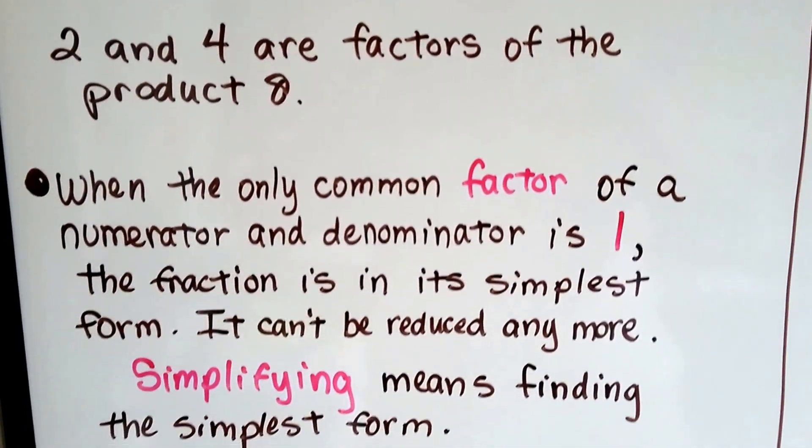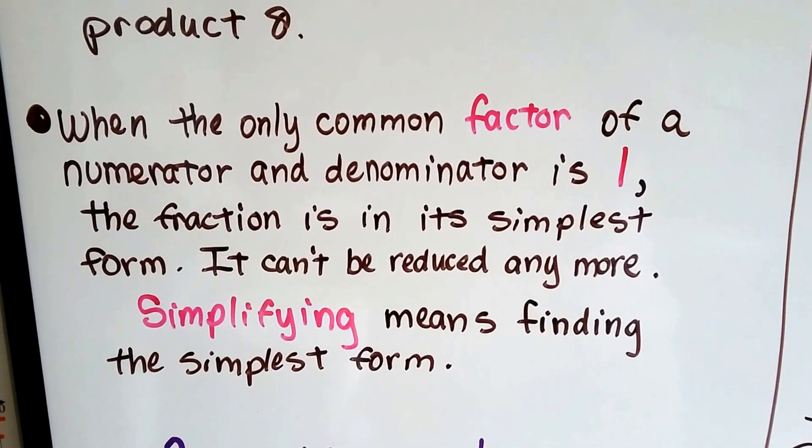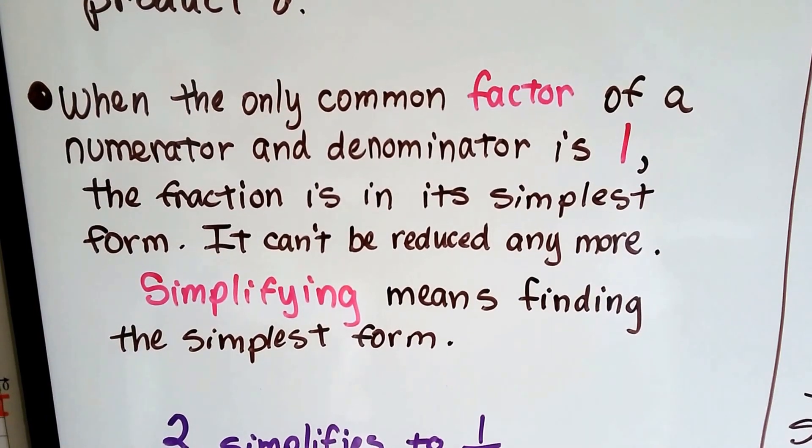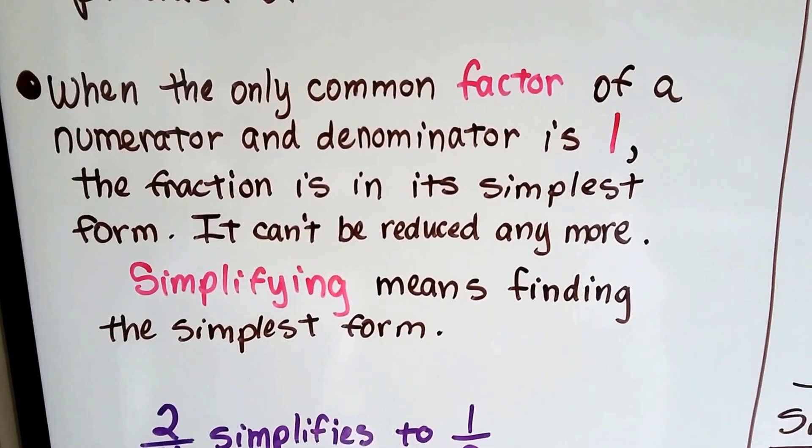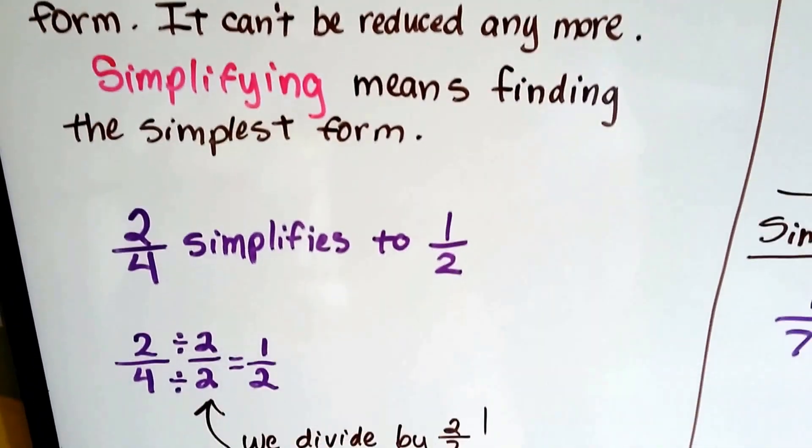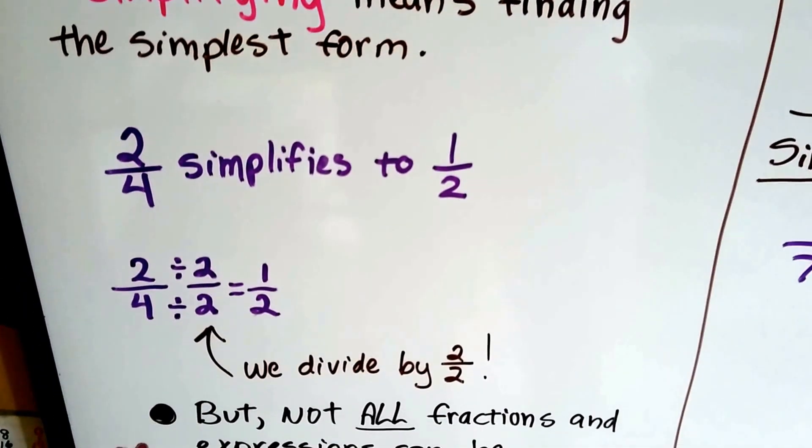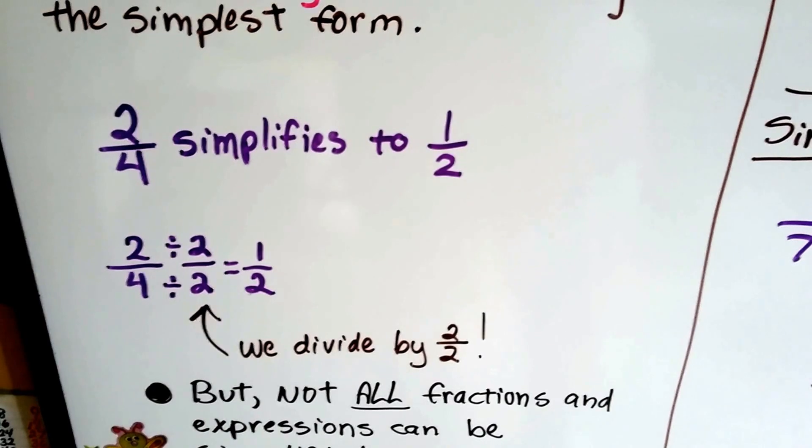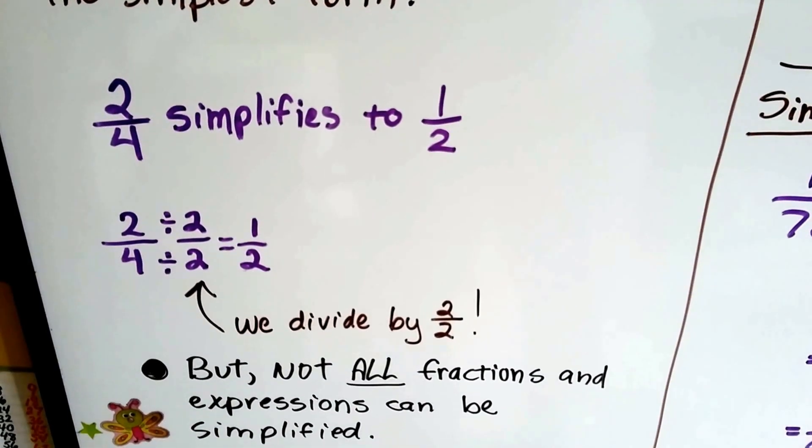When the only common factor of a numerator and denominator is 1, the fraction's in its simplest form, and it can't be reduced anymore. Simplifying just means finding the simplest form. So 2 fourths simplifies to a half. Because we can divide the numerator and the denominator by 2.